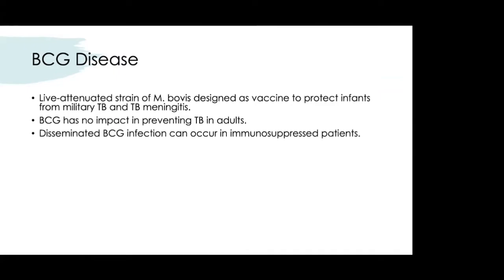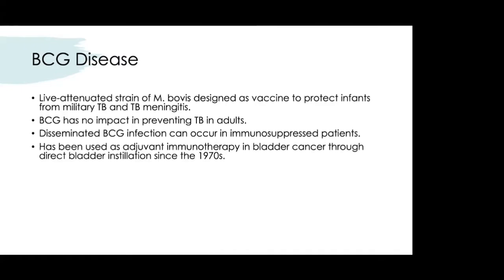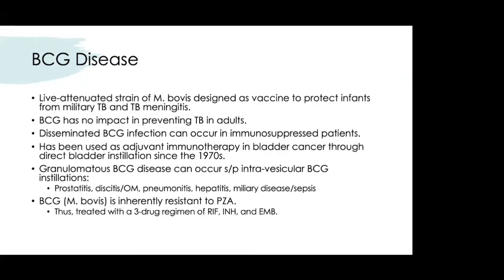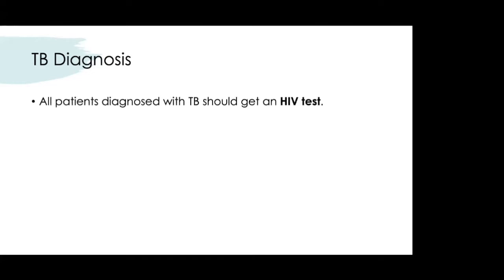Disseminated BCG infection can occur in immunocompromised individuals. BCG has been used as adjunctive immunotherapy for bladder cancer through direct intravesical installations since the 1970s, and BCG disease can occur after intravesical BCG treatment, leading to various TB syndromes. M. bovis — the BCG strain — is inherently resistant to pyrazinamide, so treatment uses a three-drug regimen of rifampin, isoniazid, and ethambutol.